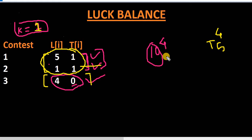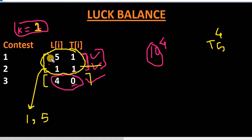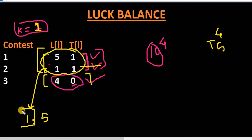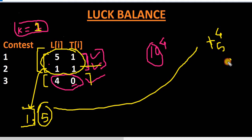For larger datasets with many entries we can't decide by common sense alone. What we can do is sort the important contests by their luck balance. For the important contests the sorted set would be 1 and 5. Since she can lose maximum one contest, we check how many she needs to win — the remaining values are added to the luck balance. So 4 plus 5 gives us the answer 9. Let's take a bigger example to make the concept clearer.